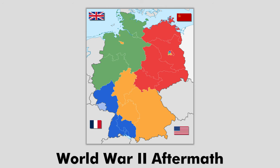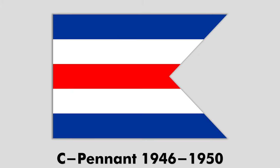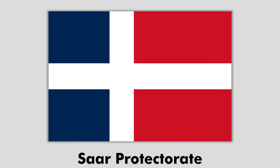After the defeat of Germany in World War II, the country was placed under Allied administration. The sea pennant was used as the merchant flag of Germany under Allied occupation, in order to identify German ships in international waters. The Saar Protectorate, which was a satellite state of France, used this flag at this time period.